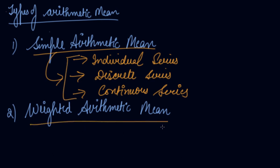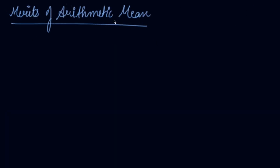In the same way, we will learn to calculate the weighted arithmetic mean. Now, what are the merits of arithmetic mean? The first merit is simplicity. Arithmetic mean is very simple to calculate. In terms of calculation and usage, arithmetic mean is the simplest of all the measures of central tendency.